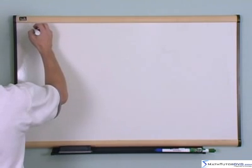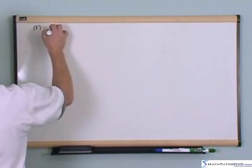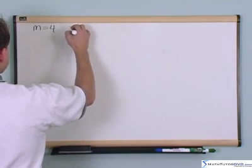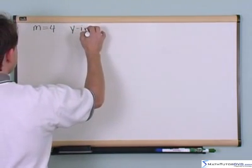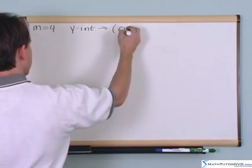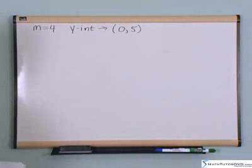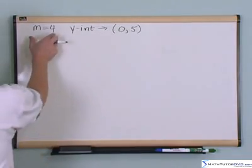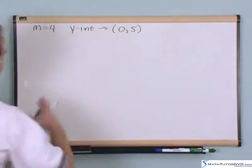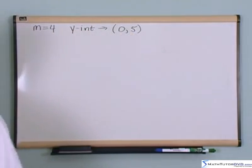The first is I say the slope is equal to four, let's just say I give that to you. And then I also tell you that the y-intercept is given by zero comma five. And then the question is on the test or quiz: given these two pieces of information, the slope and the y-intercept, write down the equation of the line.